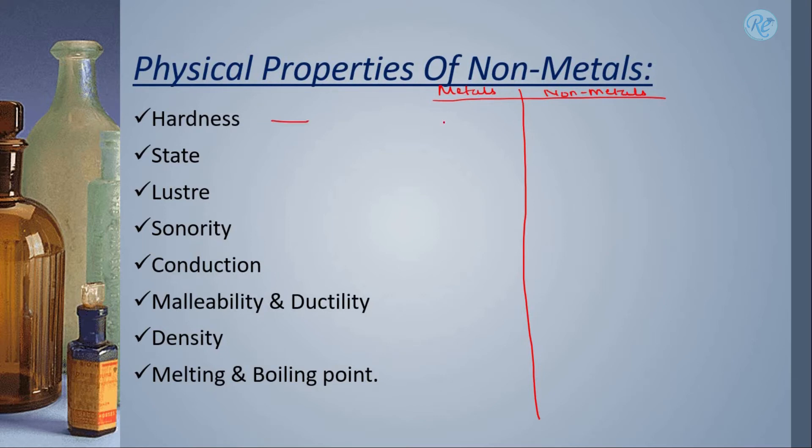In hardness, we said that metals are generally hard in nature while non-metals are soft in nature. Now, this does not go without exception.